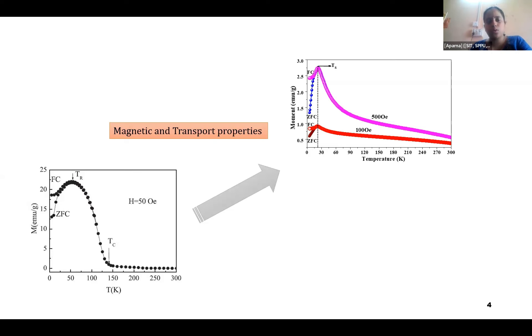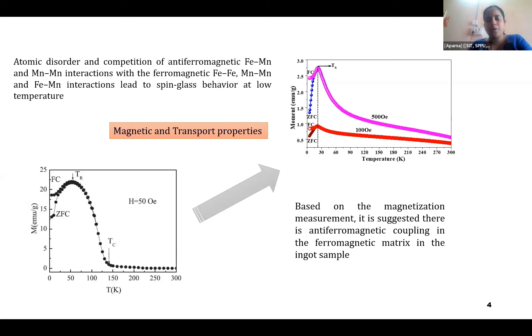Here, we have done only the DC magnetization data, where you can see there is an existence of ferromagnetic and anti-ferromagnetic nature. As there is an anti-ferromagnetic beginning, and in between, there is ferromagnetic. It is not completely achieving the paramagnetic nature in both the 100 Oersteds as well as the 500 Oersteds.